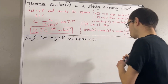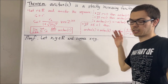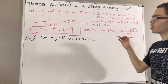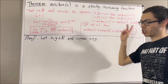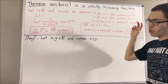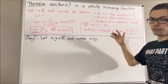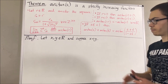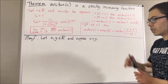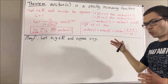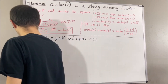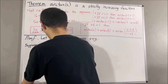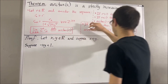From here, we want to show that the arctangent of x is less than the arctangent of y. To prove that, we're going to split this up into two cases: either negative xy is less than 1, or negative xy is greater than or equal to 1. Let's first consider the case where negative xy is less than 1.